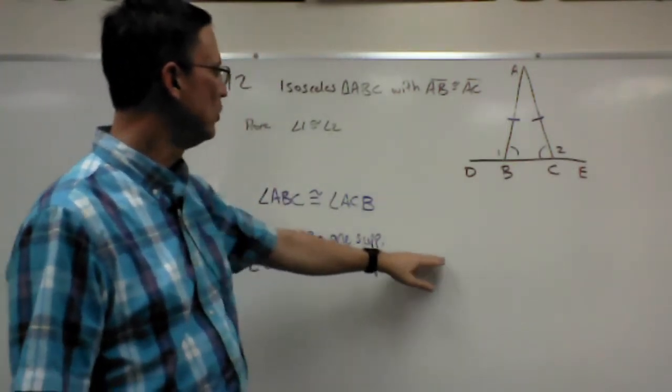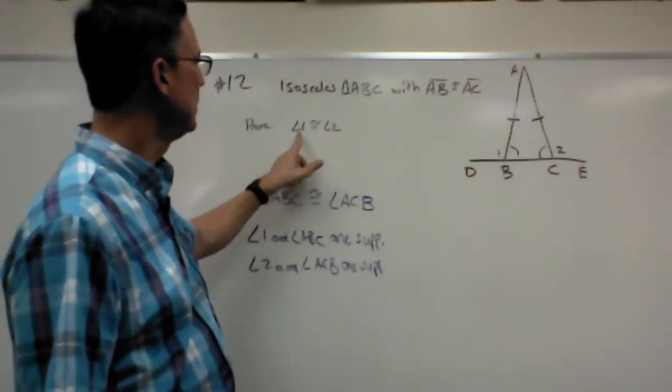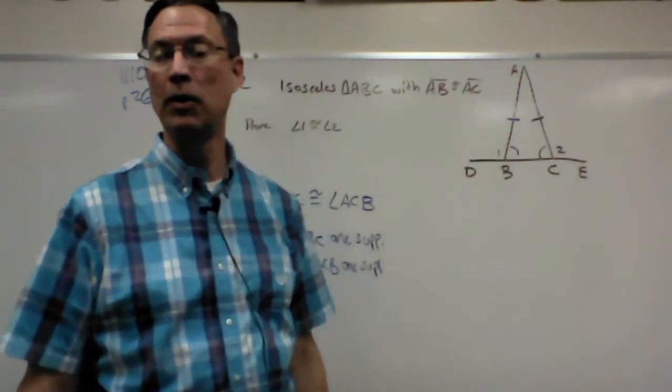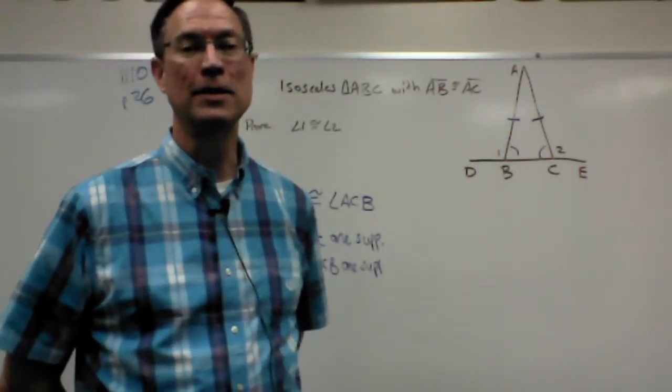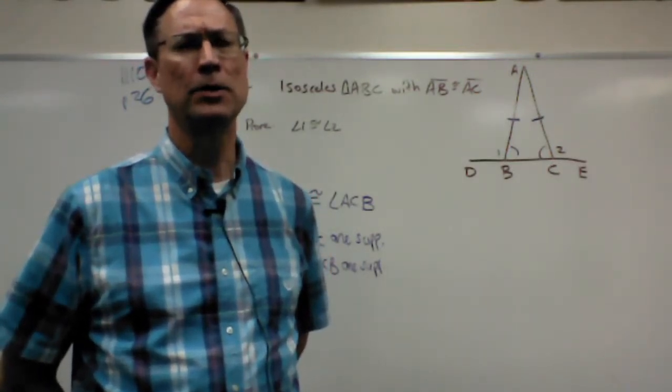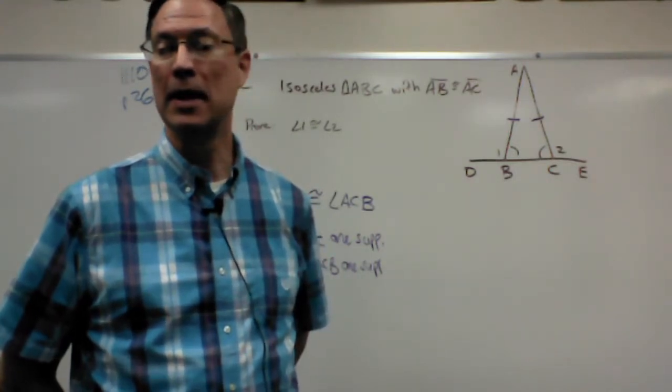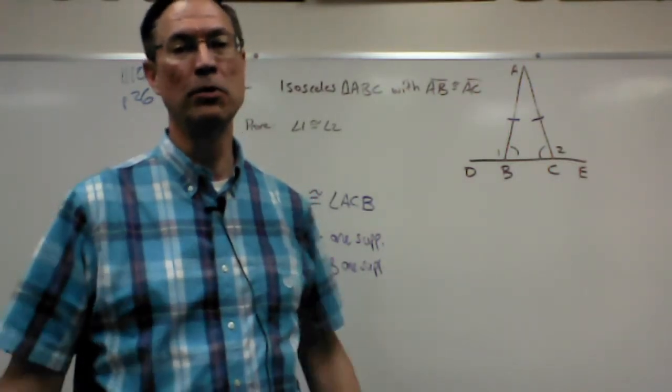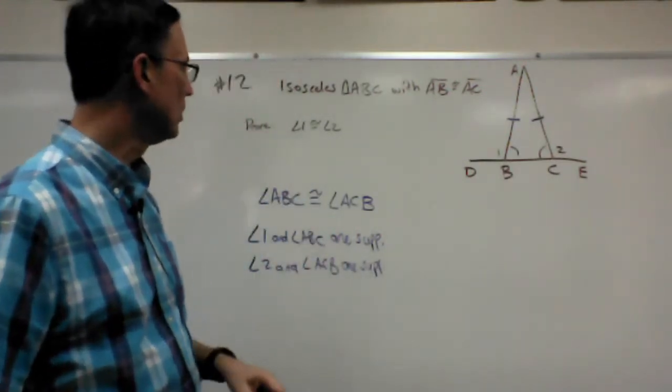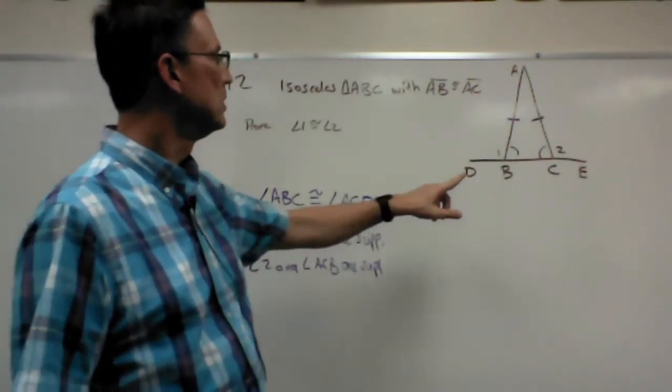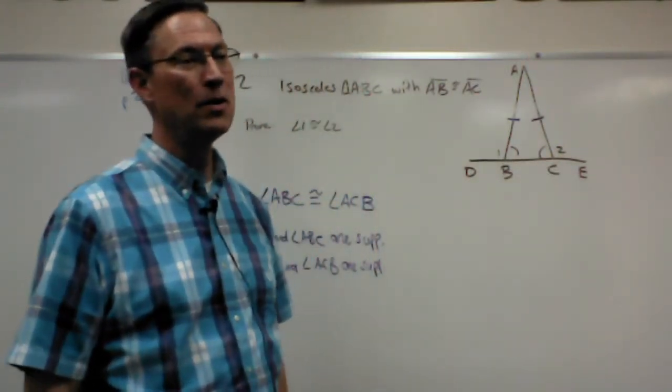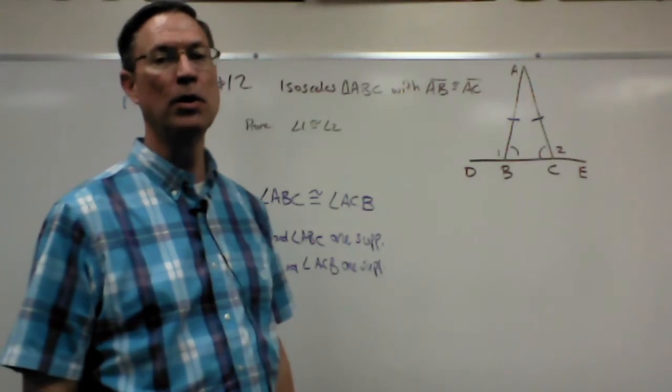So theorem nine proves that, and now we can jump to this last statement. Angle one is congruent to angle two, and we have a theorem, or rather a postulate for that. Was it from the last piece? Postulate 11, I believe it is, and let's summarize it in symbols and brief words. Angles supplementary to congruent angles are congruent. So since these two are congruent, and these two are supplements of congruent angles, then we can come to the conclusion that they are indeed congruent.